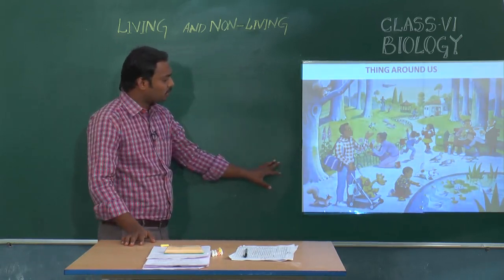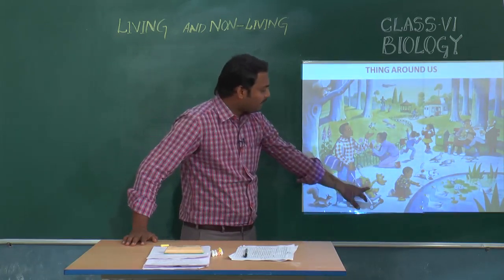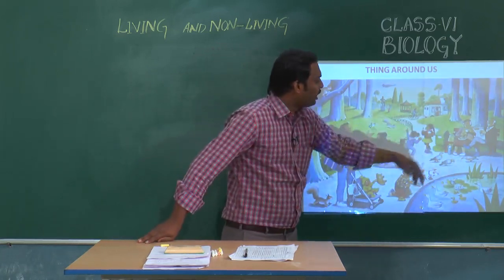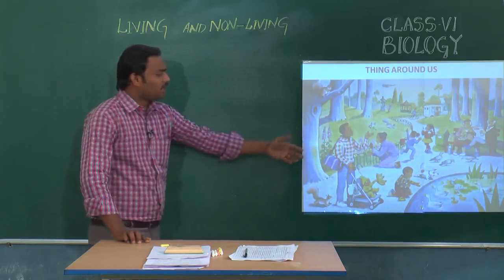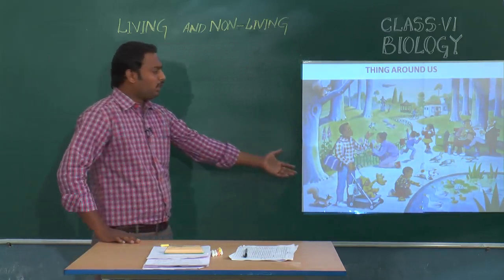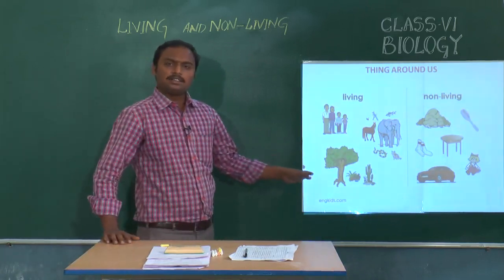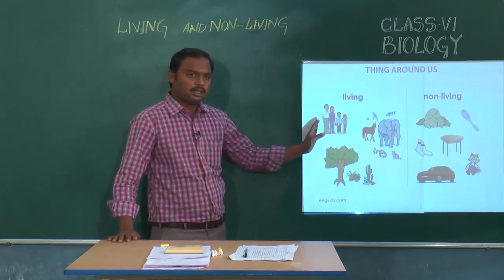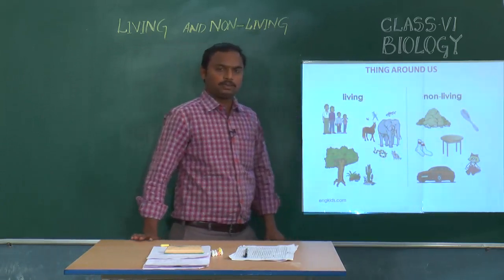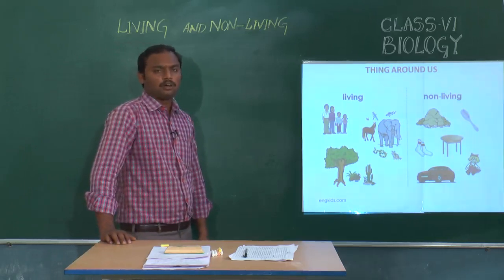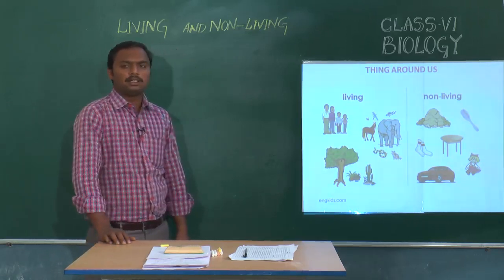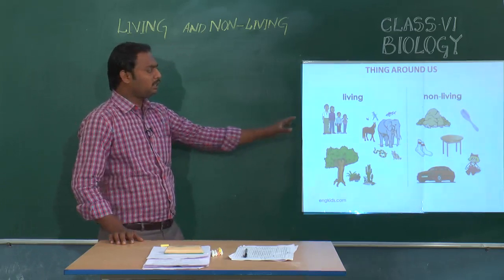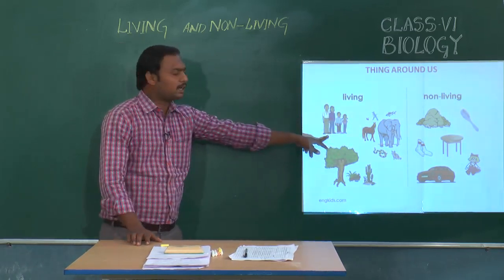If you visit a park, you can observe various things like plants, human beings, kids, birds, rabbits, children who are playing, machines, and statues. So how can we categorize all these things? Basically we can categorize these things into two categories: the things which have life we can call them as living things, and the things which don't have life we can call them as non-living things.